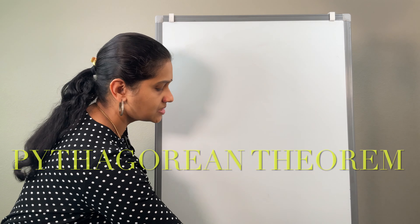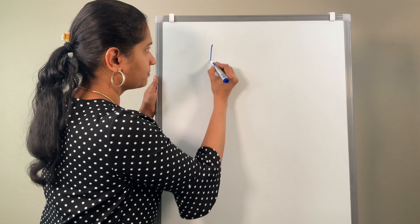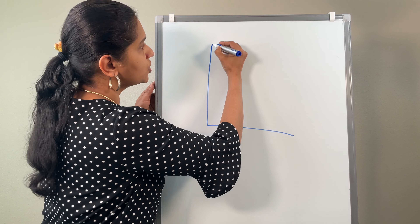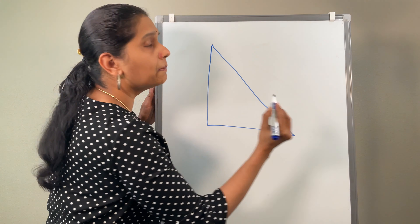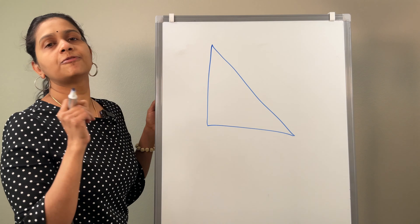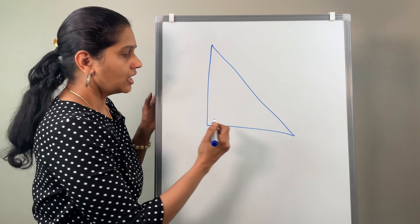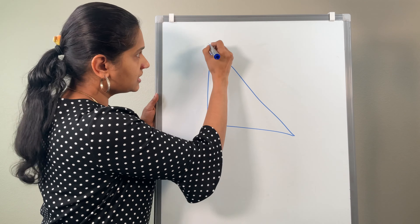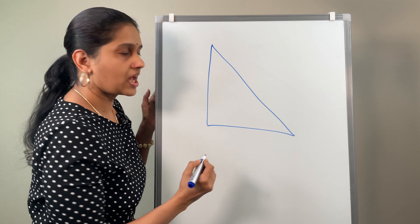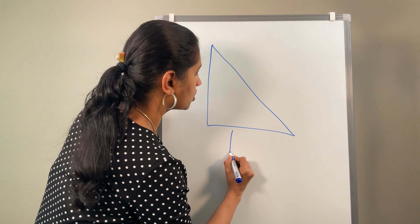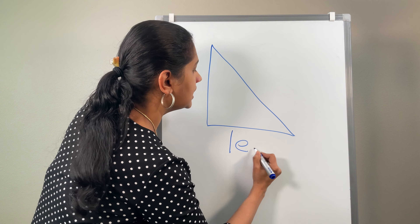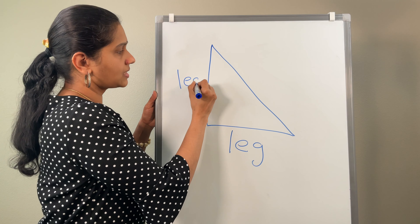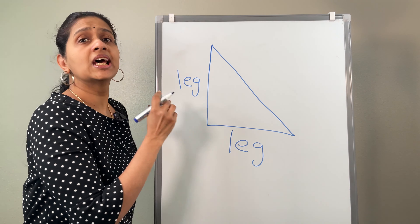Consider this right triangle. Let me introduce you to a few vocabularies of the right triangle. This side and this side of the triangle are called a leg. These two sides are called legs.